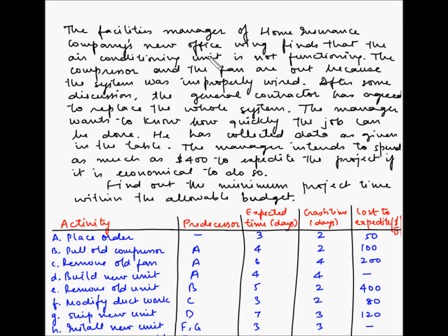The facilities manager of a home insurance company's new office wing finds that the air conditioning unit is not functioning. The compressor and the fan are out because the system was improperly wired. After some discussion, the general contractor has agreed to replace the whole system. The manager wants to know how quickly the job can be done, and he intends to spend as much as $400 to expedite the project if it is economical to do so.